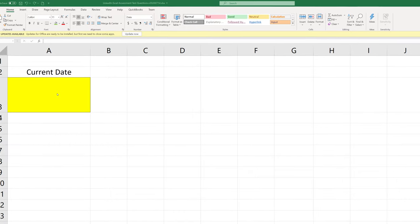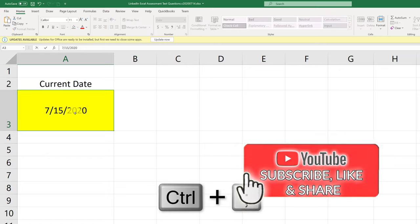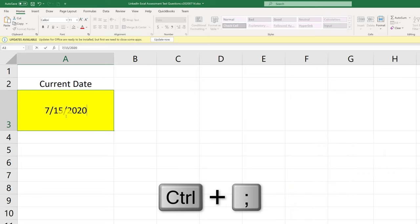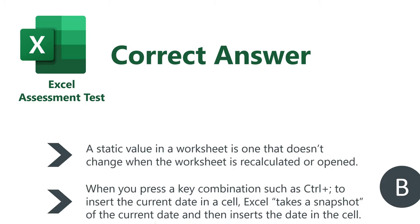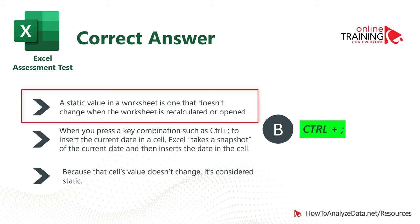To insert the current date into an Excel sheet, you need to put your cursor on a cell and then press Ctrl and semicolon. This combination inserts the current date into the cell. Keep in mind that the value inserted remains static — if you open the same worksheet tomorrow, the date will be yesterday's date. The correct answer is choice B, Ctrl plus semicolon.